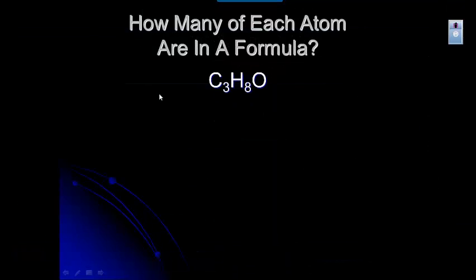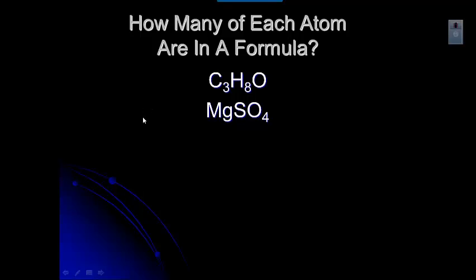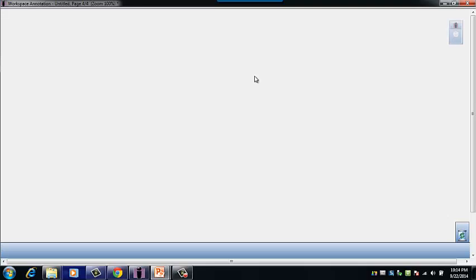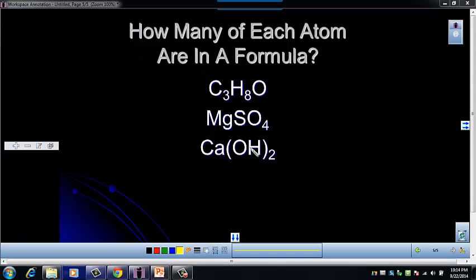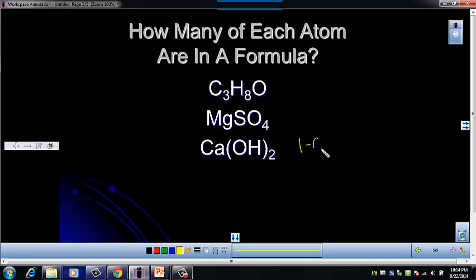Let's try another one. In this example, you have one magnesium, one sulfur, and four oxygens. Let's try another one. This formula is a little more complicated because it has parentheses. There's one calcium, two oxygens — remember that the two outside the parentheses multiplies each element inside — and two hydrogens.